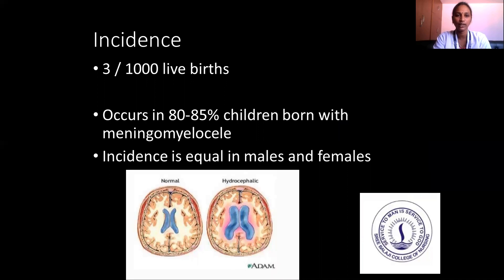The incidence of hydrocephalus: 3 in every 1,000 live births have hydrocephalus. At least 80 to 85% of children born with meningomyelocele — a congenital condition in which the spinal cord is incompletely formed with an opening and the outer layer protrudes outside — develop hydrocephalus. The incidence is equal in males and females.